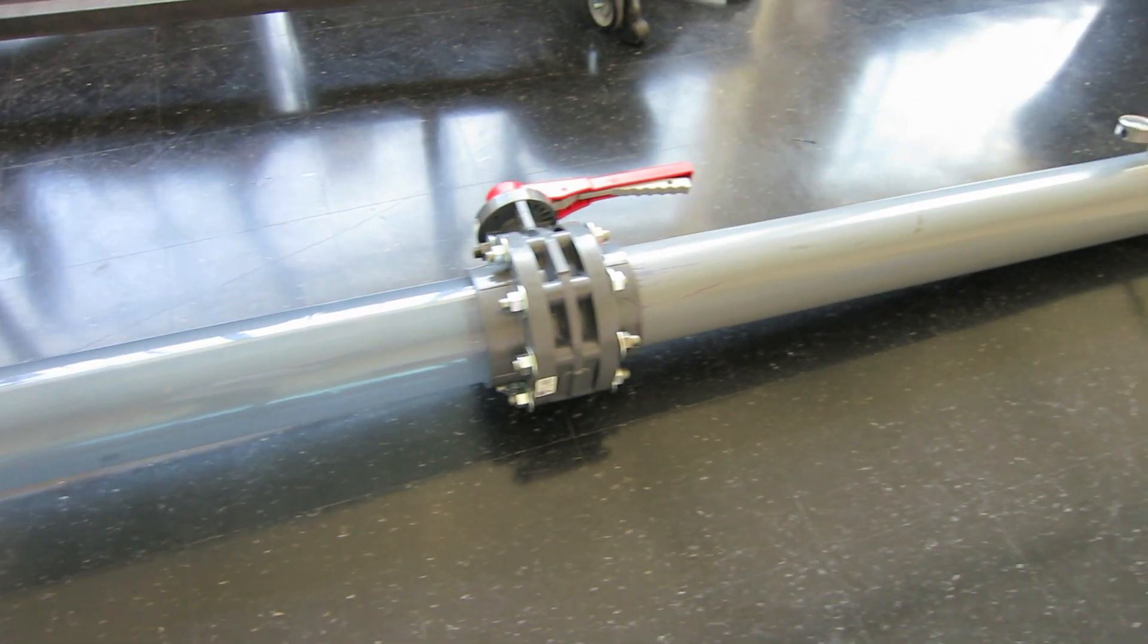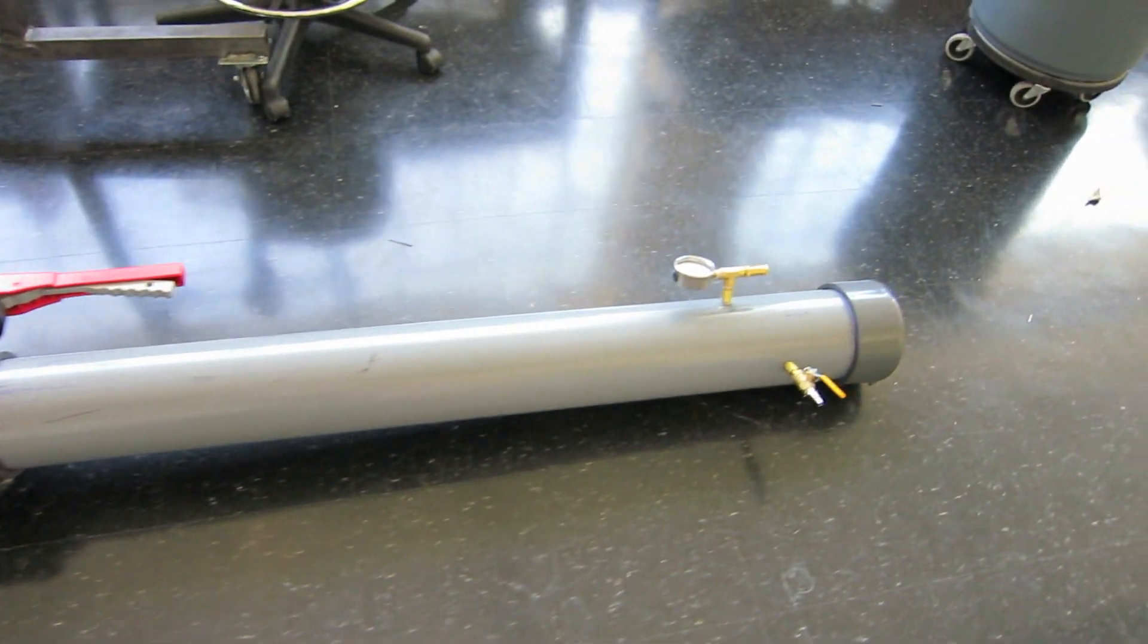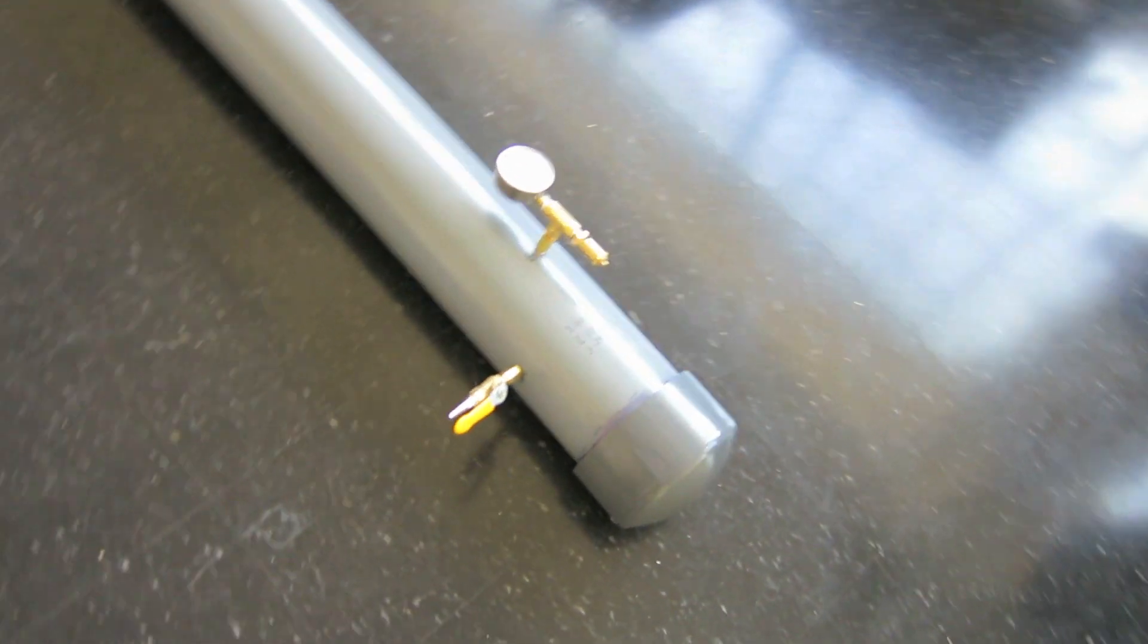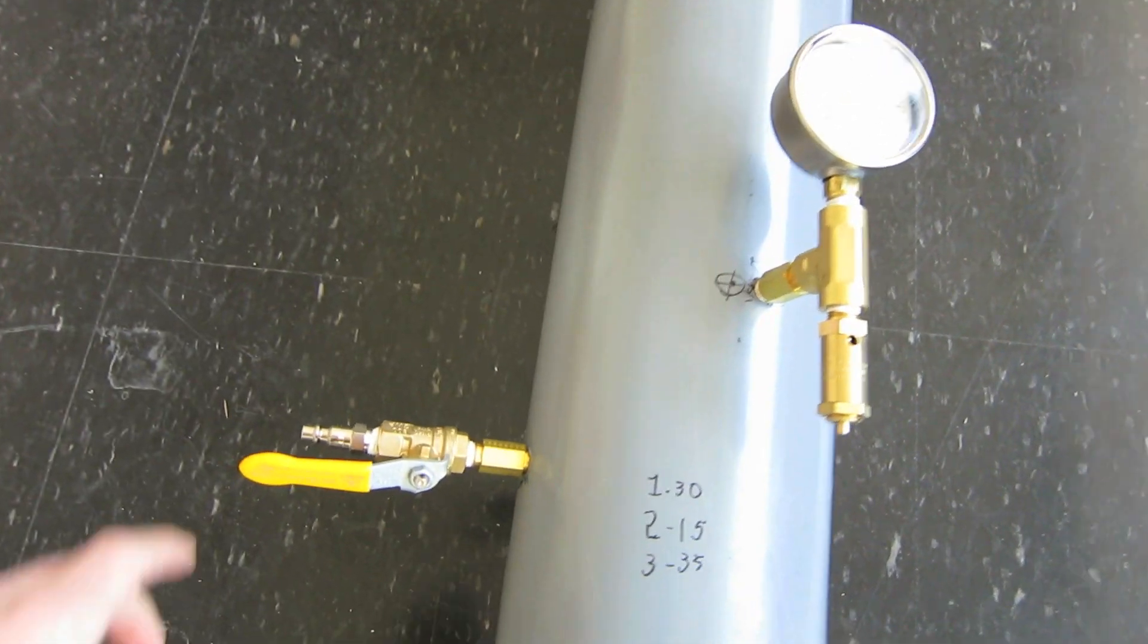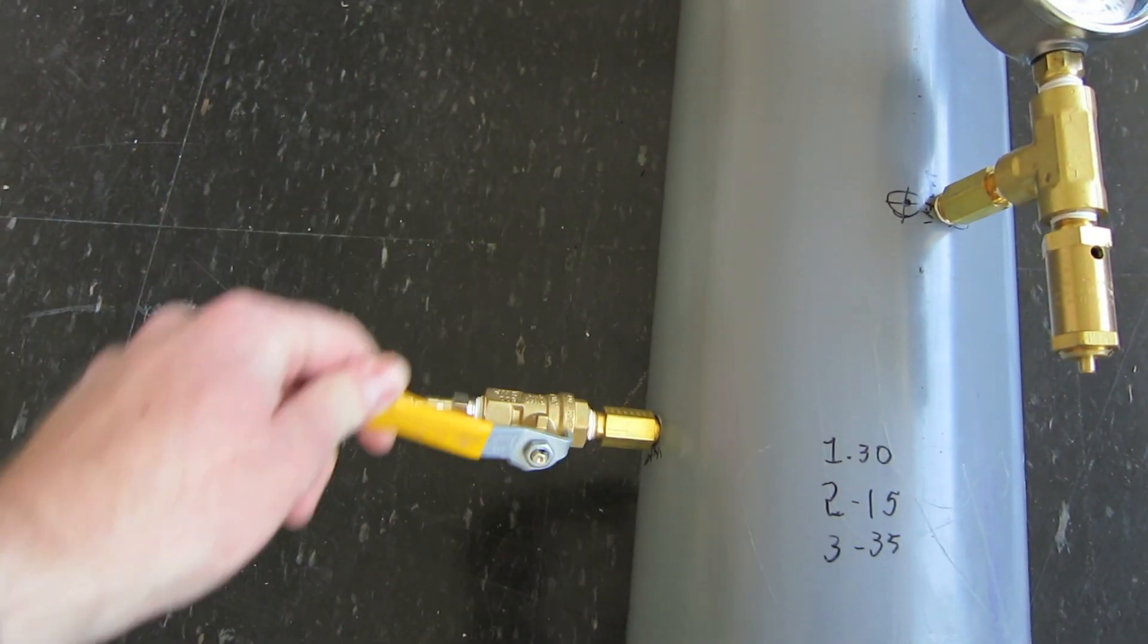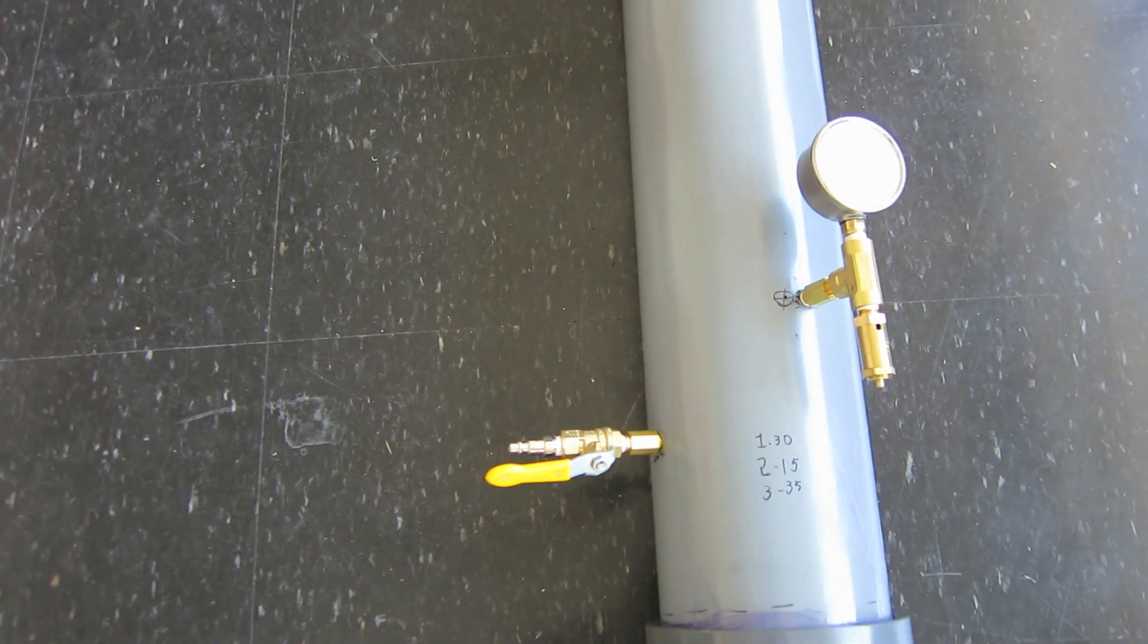This is the cannon that launches the sabot. On the back side, there's a pressure regulator. And then here is the valve to open and close to fill up the pressure chamber, which is in the back.